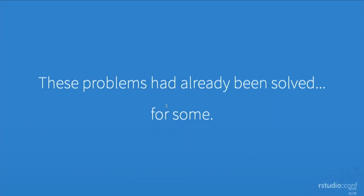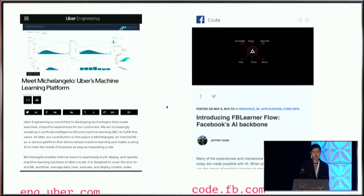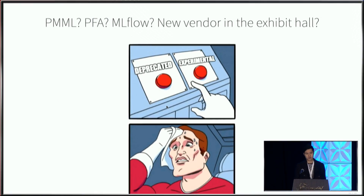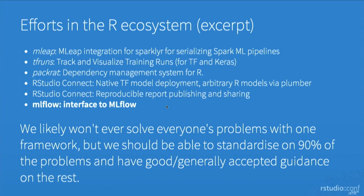If you are at some specific companies, mostly out there in Silicon Valley, you might say you've got this all solved. But what about everyone else? When you go online and do some Google searches to see what everyone else is doing, especially for model deployment, you find there are just so many different things out there. Over the past couple of years there's been a lot of effort in the machine learning community to try to solve these problems. I personally think we won't ever come up with one framework that works for everyone, but we can try to segment the problems such that you have a set of standard practices that apply to most people.